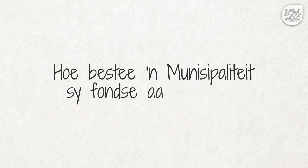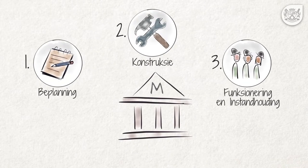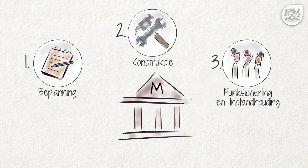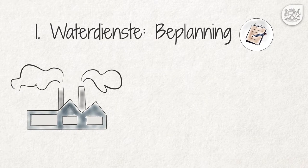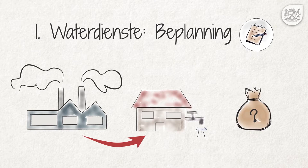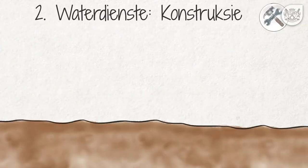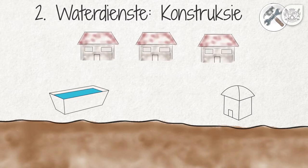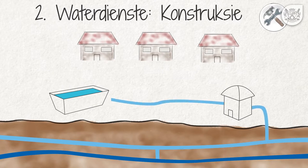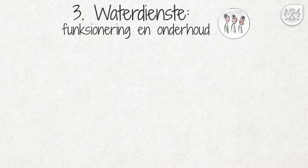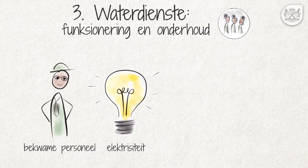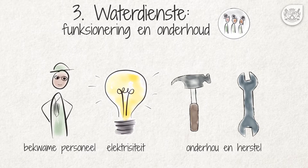Hoe bestee 'n munisipaliteit sy fondse aan dienste? 'n Munisipaliteit moet verskeie stappe doen om dienste te kan lewer. Elke stap het koste daaraan verbonde. Hierdie uitgawes moet uit al die beskikbare fondse van die munisipaliteit betaal word. Kom ons gebruik water as 'n praktiese voorbeeld. Ten eerste moet die munisipaliteit die presiese aard en omvang van die waterstelsel asook die koste daarvan bepaal. Tweedens moet die waterstelsel gebou word; afhangende van die omstandighede kan dit 'n dam of boorgat, 'n suiweringsaanleg, reservoir, pompe, meters en 'n ondergrondse waternetwerk insluit. Ten derde vereis 'n waterstelsel opgeleide personeel en elektrisiteit, en dit moet ook gereeld instandgehou en wanneer nodig herstel word, wat ook gereedskap en materiaal vereis.